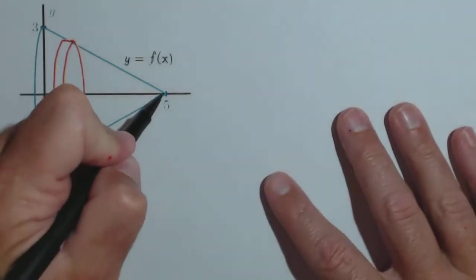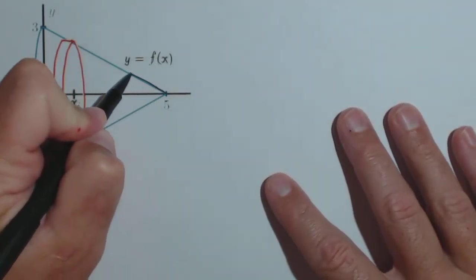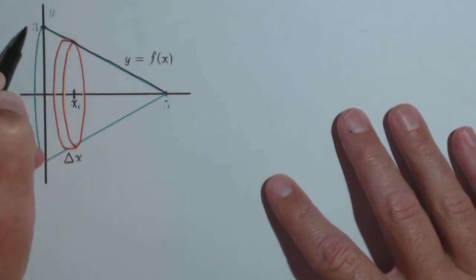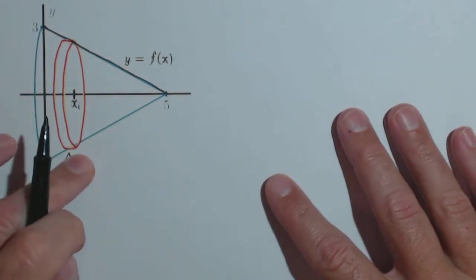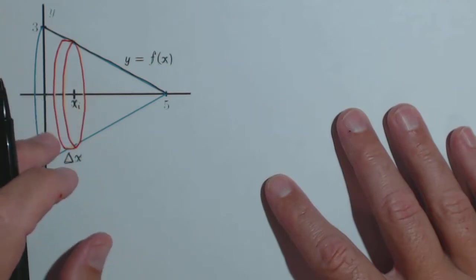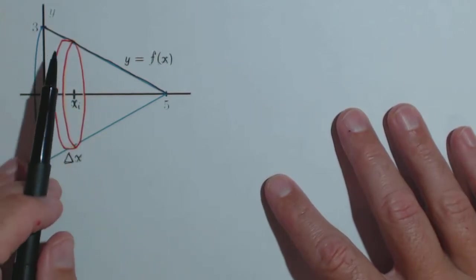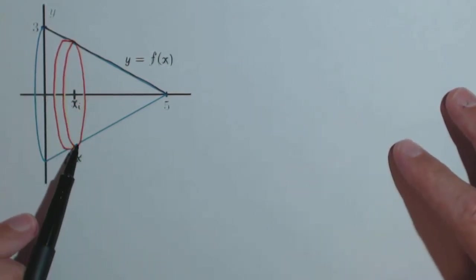In this video, we're going to look at what happens when we take a linear function, which is this line right here, and revolve it around the x-axis. And what we get is a three-dimensional cone, and we're going to see how we can use a definite integral to calculate the volume of that region.